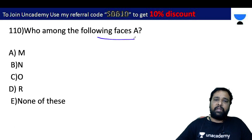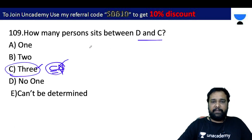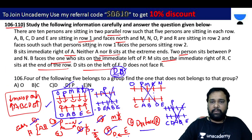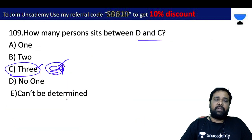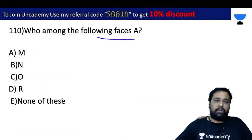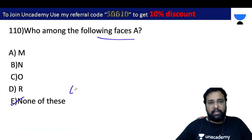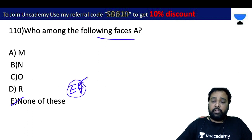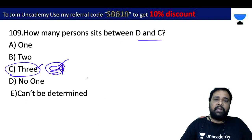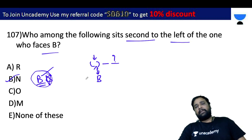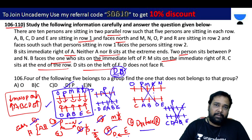Who among the following faces A? A faces towards P. So P and A — the answer is none of these. None of these is the right answer, option C.